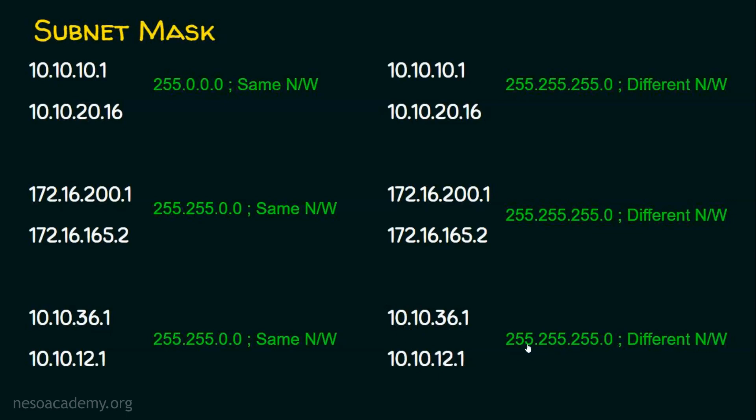In this case, the subnet mask is 255.255.255.0. I hope these examples clearly illustrate the purpose of subnet mask. The subnet mask defines which is the host portion and which is the network portion. With the help of subnet mask, we can determine whether devices belong to the same network or different networks.